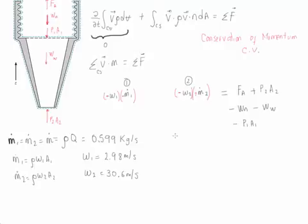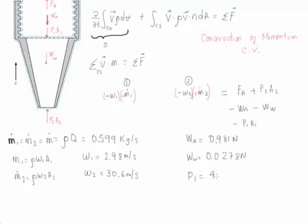Having the mass of the nozzle, we can calculate its weight, which is equal to 0.981 newtons. Since we have the volume of the water and its density, we can calculate the water's mass and therefore its weight, which is equal to 0.0278 newtons. The pressure at point 1 is already given and is equal to 464 kilopascals. Because at point 2 we are exposed to the atmosphere, the value of P2 is equal to zero.